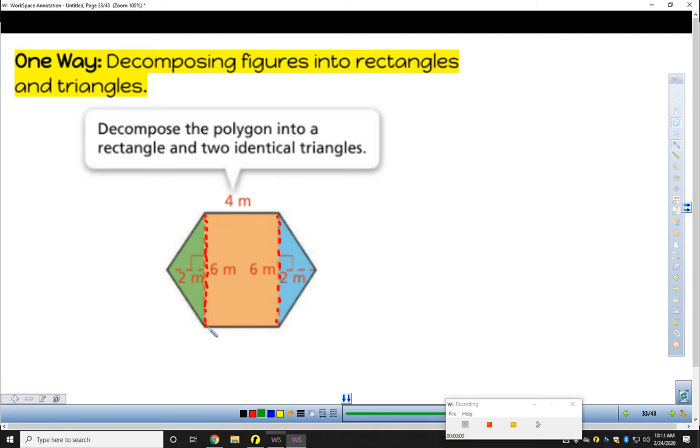Green triangle, area of a triangle, half base times height. Base is 6. Height, perpendicular distance from the base, is 2. Half of that. 6 times 2 is 12. Half of 12 is 6 meters squared.